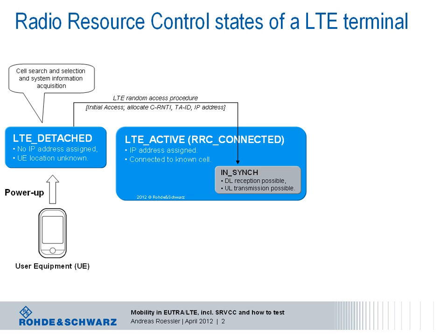During a random access procedure, the network allocates an identity to the terminal called C-RNTI, which stands for Cell Radio Network Temporary Identity. Further, an IP address and a tracking area ID are assigned. There are now two substates for RRC connected. The substate we reach during initial random access procedure is called in-sync. In this substate, downlink and uplink transmission are possible.